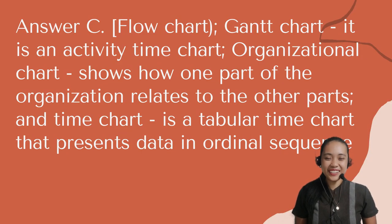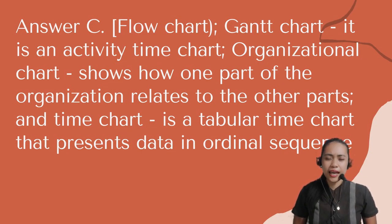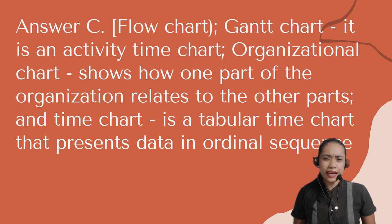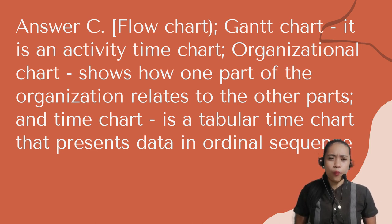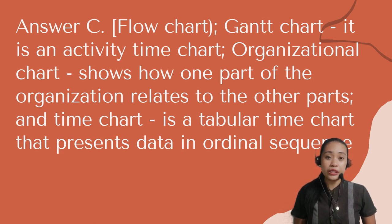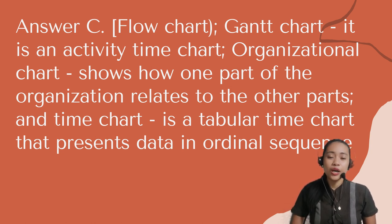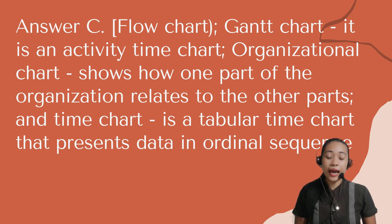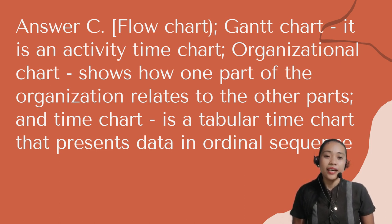Nice one. The correct answer is letter C — Flow chart. A Gantt chart is an activity-time chart. An organizational chart shows how one part of the organization relates to the other parts. And a time chart is a tabular time chart that presents data in ordinal sequence.